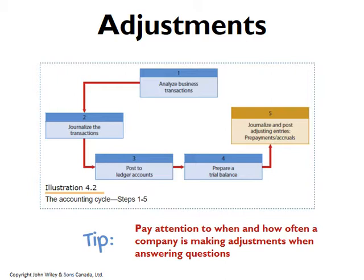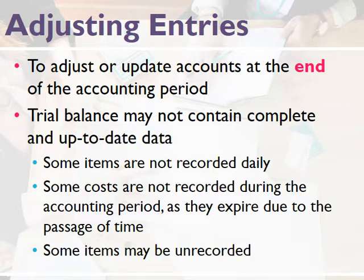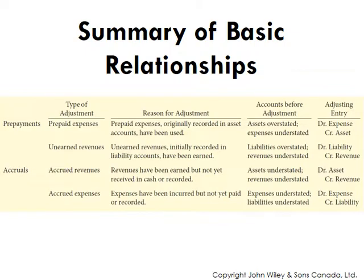The purpose of adjusting entries is to make all our accounts updated until the date on which we're reporting. We'll need to record some transactions that we wouldn't have had a trigger for during the period. For example, certain items aren't recorded daily or during the accounting period at all as they expire. Other items might be completely unrecorded, such as bank fees and other items which might be automatically deducted from our company accounts or credit cards. You'll find here, as well as in the text, a summary of the four basic adjustments we most often look at making.